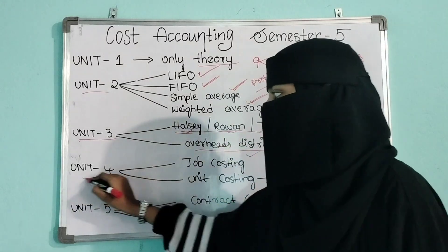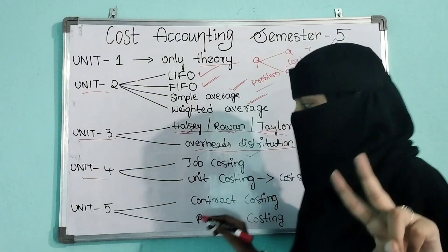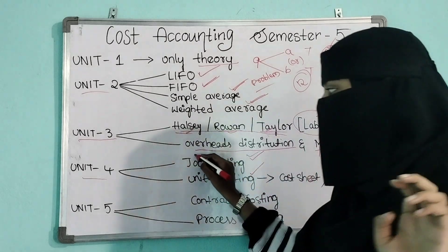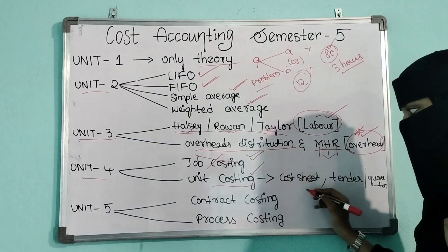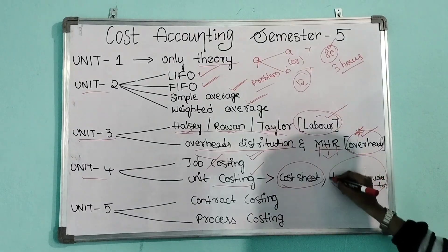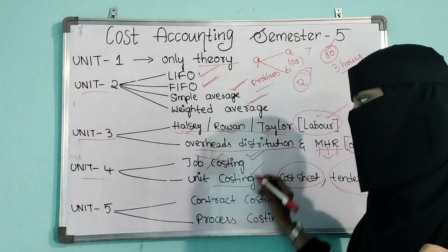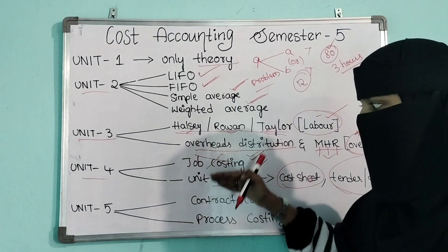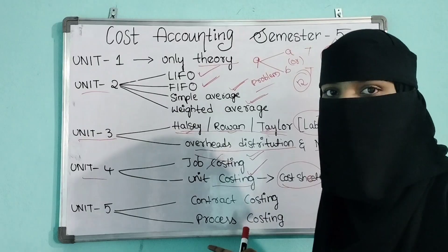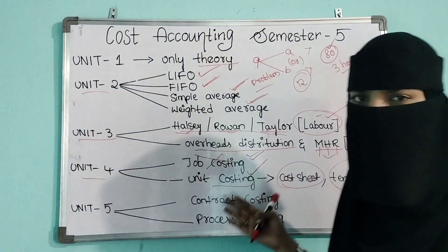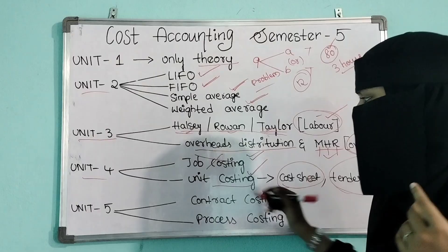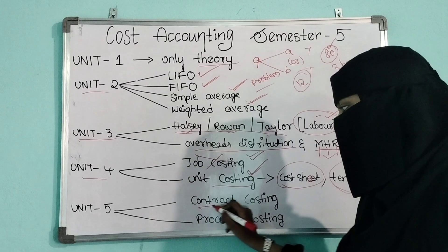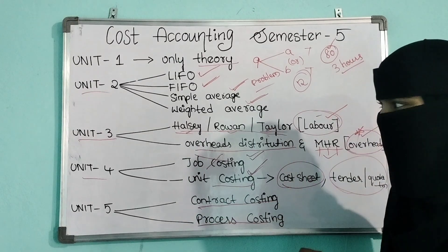Unit 4 is also divided into two parts: Job Costing and Unit Costing. I suggest you leave Job Costing and go with Unit Costing, which covers cost sheet and tender or quotation. Cost sheet is very easy. If you are comfortable with Job Costing you can go with that too, but my suggestion is to go with Unit Costing.